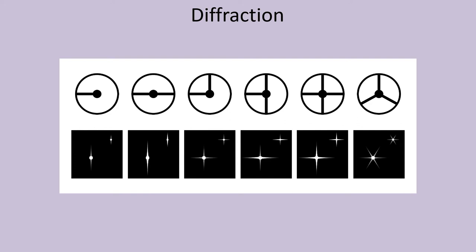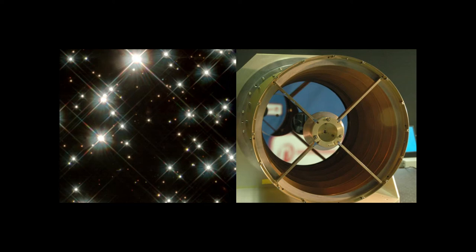A spider having two straight veins oriented at a right angle to each other, like the third image from the left, will produce two intersecting diffraction lines having the same perpendicular orientation, resulting in four diffraction spikes. A three-vein spider with the veins set 120 degrees apart, like the rightmost image, will produce a star image having three intersecting diffraction lines for a total of six spikes. Here's an example of four-spike diffraction in a star field photo. See how every star seems to have an X of spiked light in the center of it? That's the effect of diffraction.